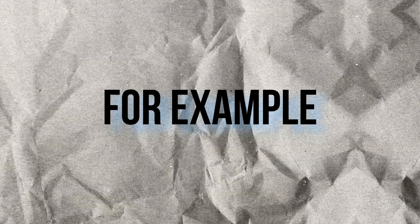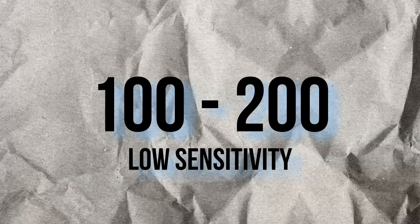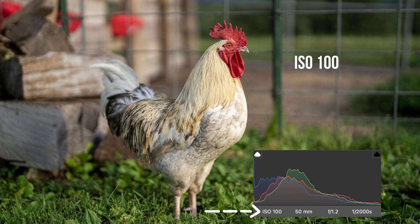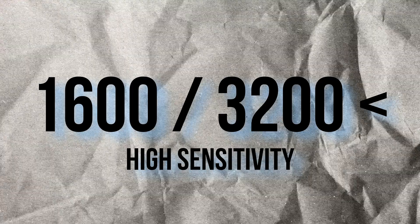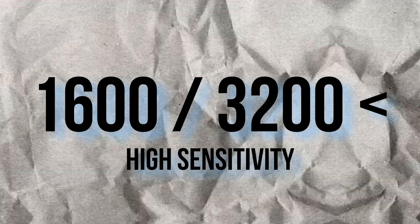So what exactly is ISO? Simply said, ISO controls how sensitive your camera sensor is to light. For example, ISO 100 and 200 is low sensitivity and this is best for daylight or controlled lighting setups. On the other end, ISO 1600, 3200, and up is high sensitivity and they're great for low light.